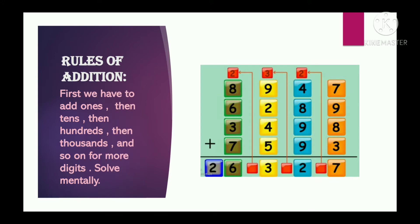Now we will add the hundreds place. We get 23, so we write 3 below the hundreds place and give carry 2 over the thousands place. Now we add the thousands place and by adding the carry we get 26. So the answer is 26,327.